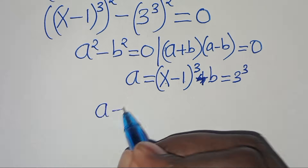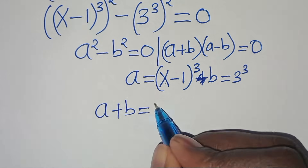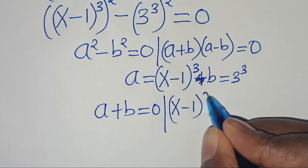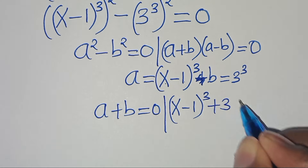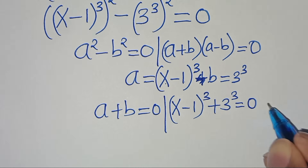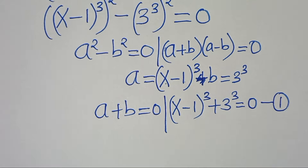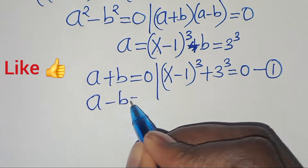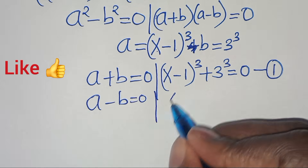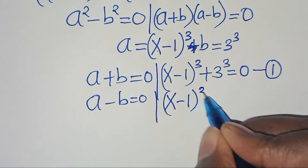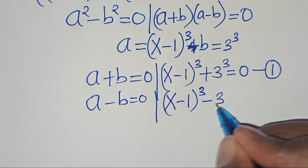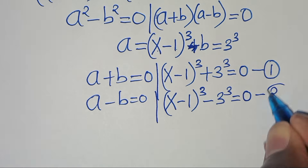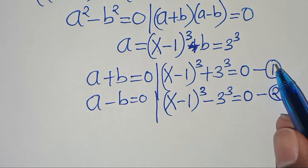So now a plus b equals 0, which is (x minus 1)^3 plus 3^3 equals 0 — let's call this equation 1. And a minus b equals 0, which is (x minus 1)^3 minus 3^3 equals 0 — let's call this equation 2. We can call these Case 1 and Case 2.